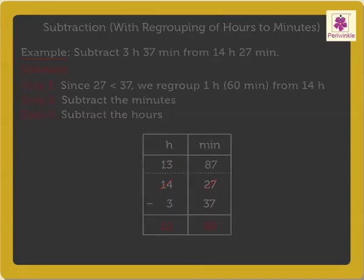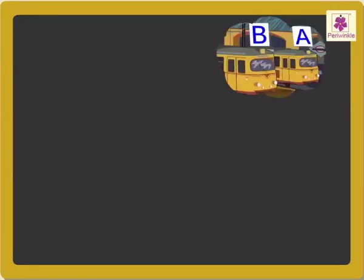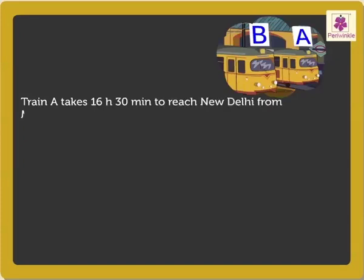Now, let's try solving a story problem. Train A takes 16 hours 30 minutes to reach New Delhi from Mumbai.